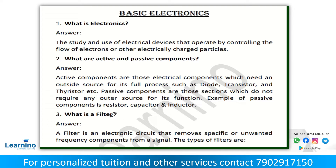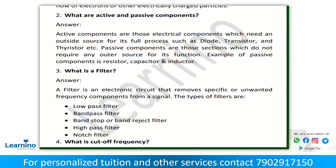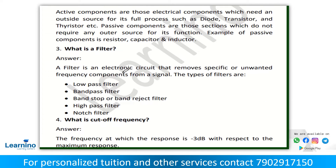Next question: what is a filter? A filter is an electronic circuit that removes specific or unwanted frequency components from a signal. Types of filters are low pass filter, band pass filter, band stop or band reject filter, high pass filter, and notch filter.